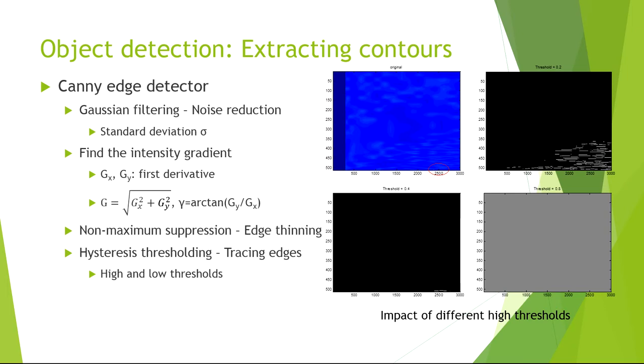0.04 is good here because it finds the object while not introducing too many false positives like this threshold point 0.02 does.